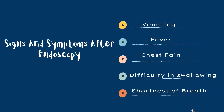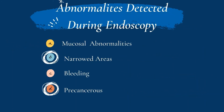Abnormalities detected during endoscopy include mucosal abnormalities such as erythema, ulcer, erosion, and polyp. Narrowed areas and strictures of the esophagus, stomach, or duodenum can be detected and treated. Objects stuck in the esophagus or stomach can be detected and removed. Bleeding due to ulcers can be detected. Pre-cancerous abnormalities such as Barrett's esophagus can be identified. Inflammation or swelling, blockages, and esophageal reflux disease — a digestive disease in which stomach acid or bile irritates the food pipe — can also be detected, and biopsies may be needed to diagnose.